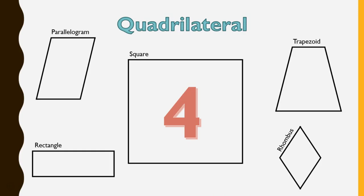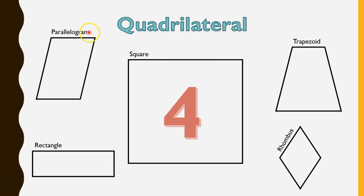And a quadrilateral has four sides. Quadrilaterals are very interesting because there are lots of different types, and their names are derived by the attributes of these quadrilaterals — sometimes their angles are different, sometimes the length of their sides are different, or if their lines are parallel to each other. So all of those attributes create special names for all of these quadrilaterals. But what makes them all quadrilaterals is that they all have four sides.